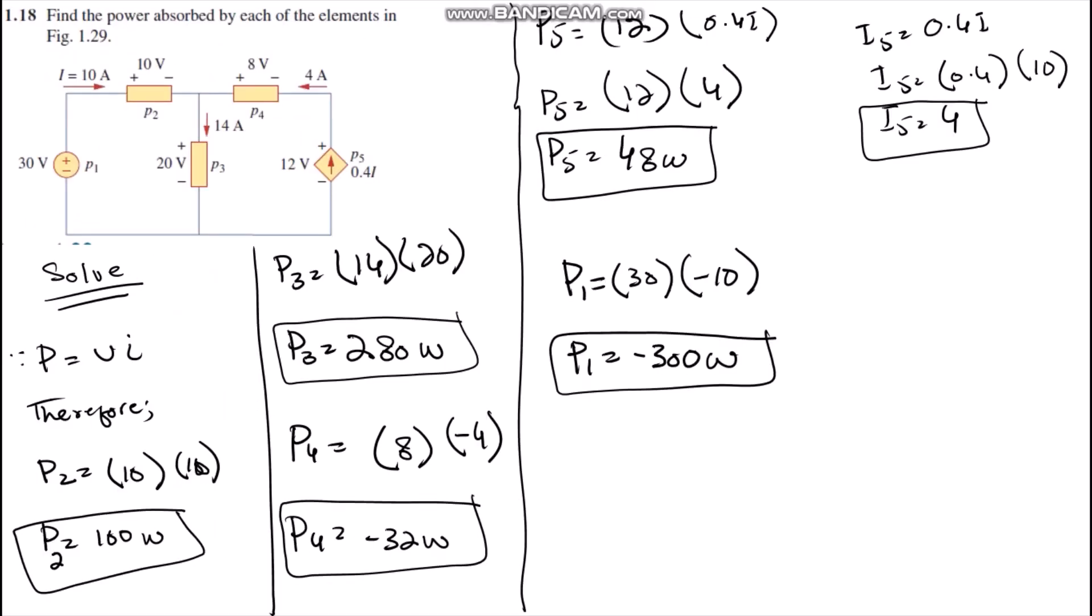Hello everyone, today we are going to solve question number 1.18. The question is: find the power absorbed by each of the elements in the figure. This means in the circuit we have to calculate the power of each element including the source.